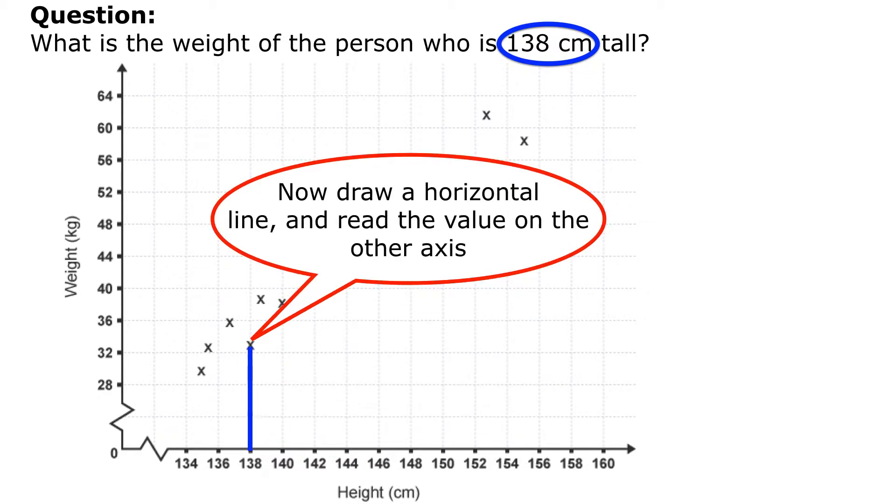Now I'm going to draw a horizontal line going across from that and read the value on the other axis. So I'm going to draw that line going off and that's approximately 33.